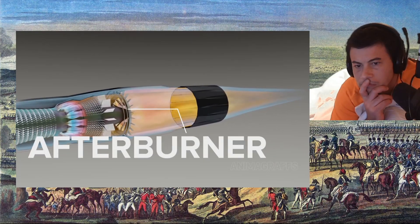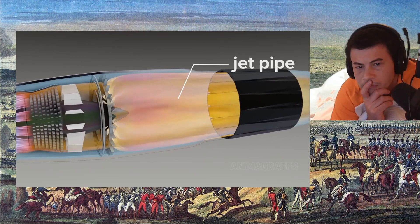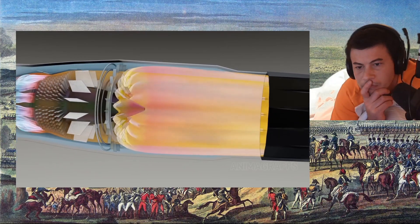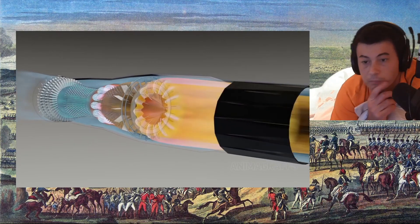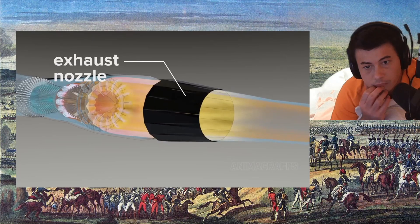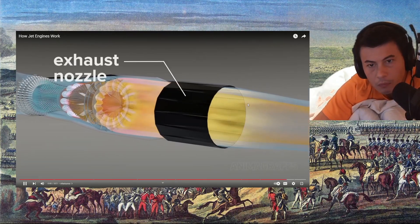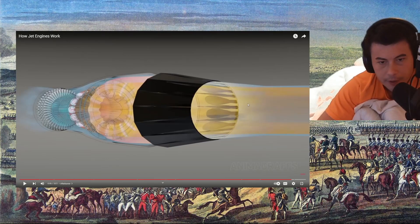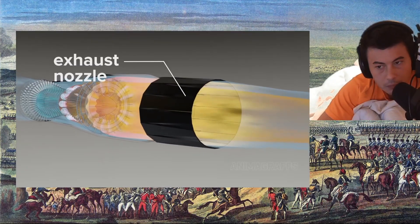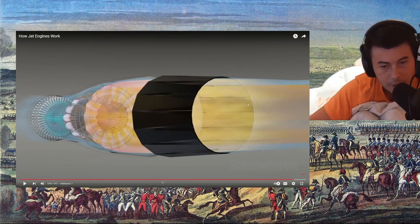Afterburner — high-performance engines may have afterburner capability. Additional fuel is sprayed into a jet pipe section where it mixes with exhaust gas and is ignited, producing a second stage of combustion. Since afterburner is fuel-inefficient, it's generally used in short bursts during takeoff, climb, or combat maneuvers. The exhaust nozzle is adjustable for maximum exhaust acceleration and to avoid undesirable back pressure — so clearly the exhaust acceleration means more thrust.